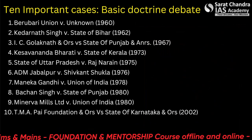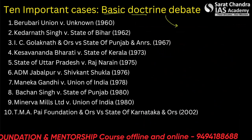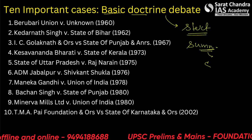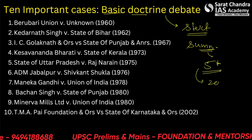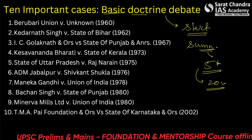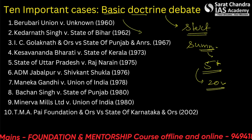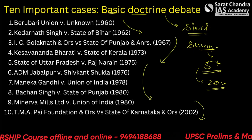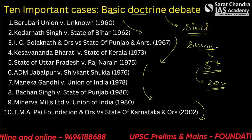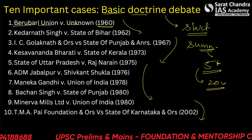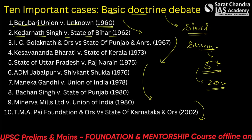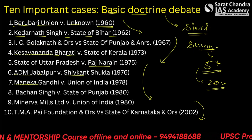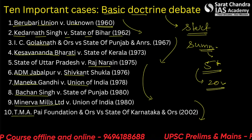In this video I shall be covering these 10 cases. We will try to keep to the summary and only the important parts, and try to finish in 20 minutes or so. These cases are chronologically arranged and are working on a cause and effect theory. The cases are: Beruvari Union vs Unknown (1960s), Kedarnath Singh vs State of Bihar (1962), Golaknath case, Keshwanand Bharati case, Raj Narayan case, ADM Jabalpur or Habeas Corpus case, Menka Gandhi vs Union of India, Bachchan Singh case, Minerva Mills case, and TMA Pai Foundation case.